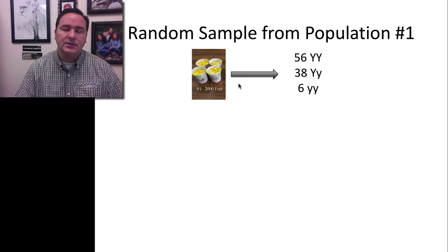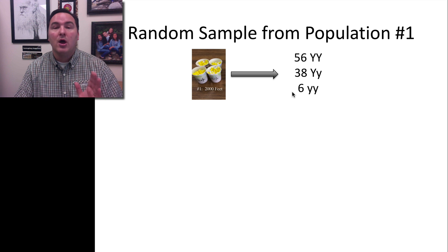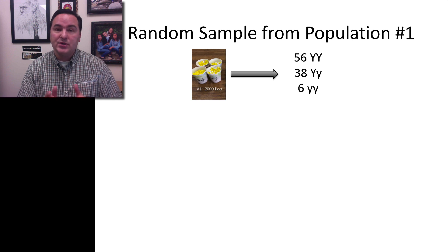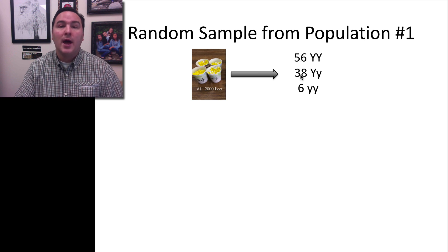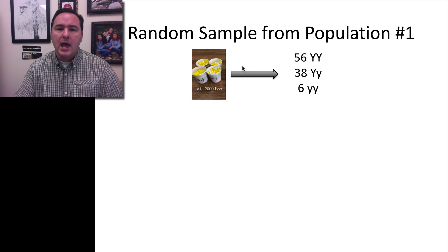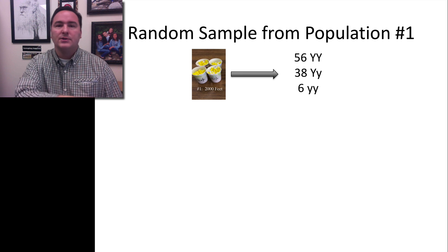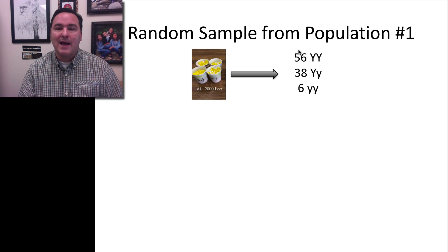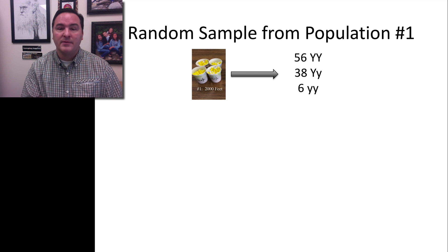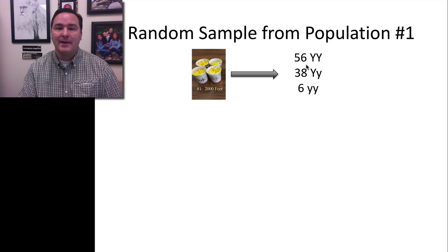I can take a random subsample from this large population — I'm going to take out 200 beads. The reason is that this population is diploid, meaning every individual has two alleles for every gene. So 200 beads represents 100 individuals. I pull out two beads at a time: two yellow beads = big Y big Y; one yellow and one white = big Y little y; two white beads = little y little y. Doing this 100 times, I end up with counts of 56, 38, and 6.